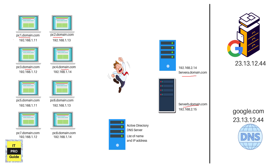As we saw in the previous video, when we installed Active Directory, a DNS role was also installed automatically. In the next video we will be joining computers to the Active Directory domain controller. All computers joined to Active Directory are called members of Active Directory, and they will be listed inside the Computers container so an administrator can easily see who has been added and what the computer names are.